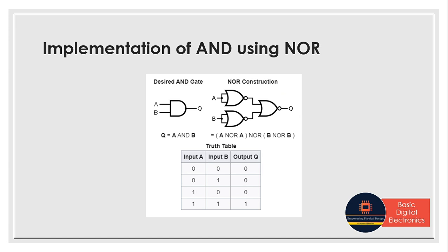Next we will see how to implement AND gate using NOR gate. To construct AND using NOR gate, we need two NOR gates on the inputs and one NOR gate at the output. We take two inputs A and B, feed them each into separate NOR gates, and then the outputs of those two NOR gates are fed into a third NOR gate. So two NOR gates on the inputs followed by a NOR gate at the output gives us the same functionality as an AND gate.